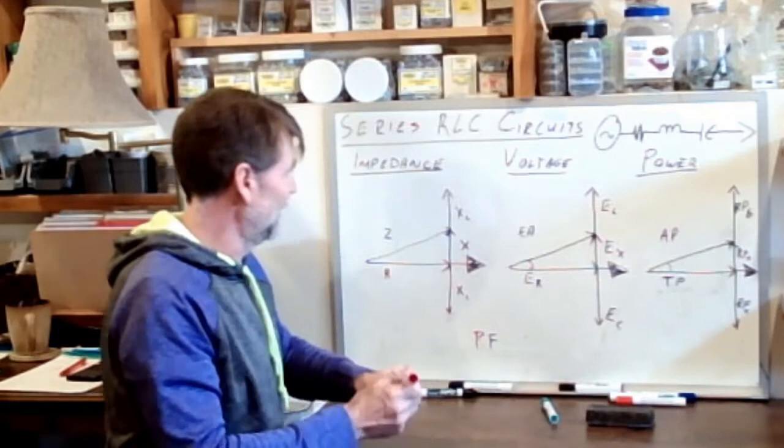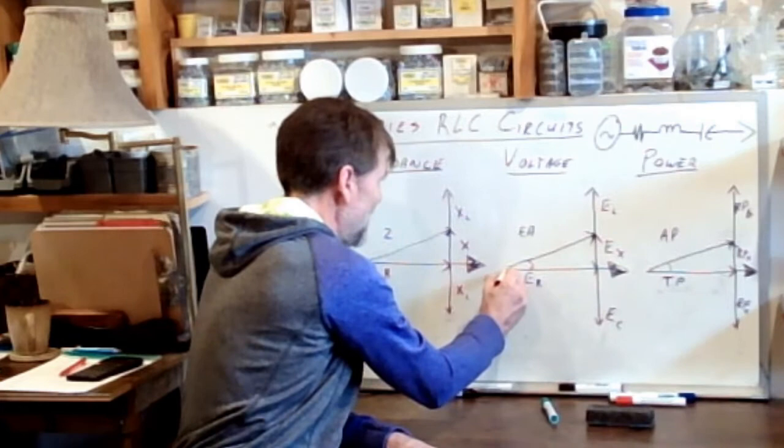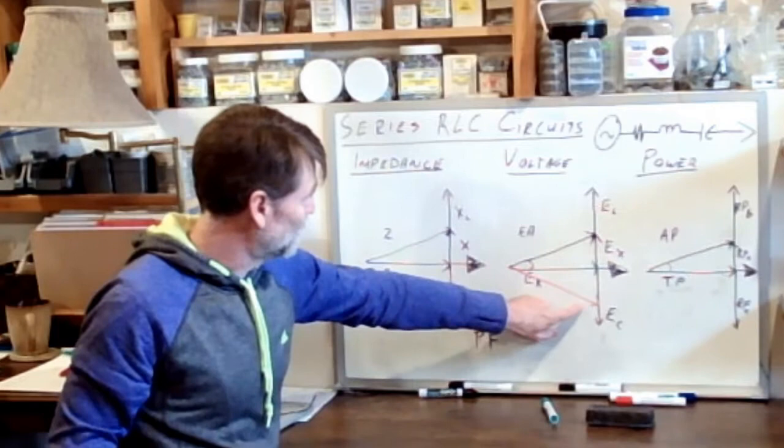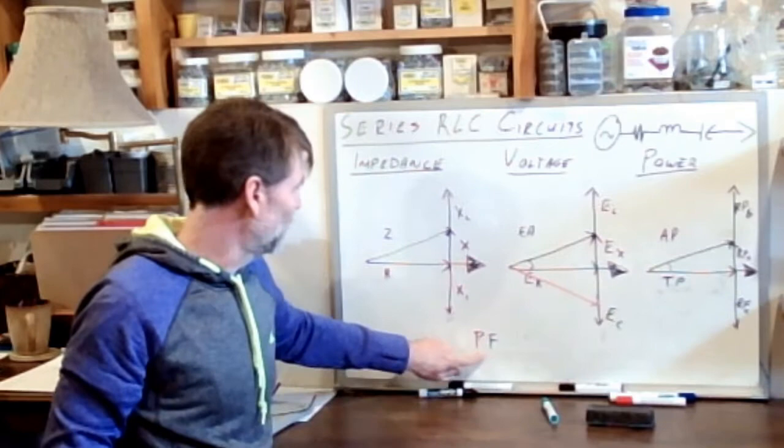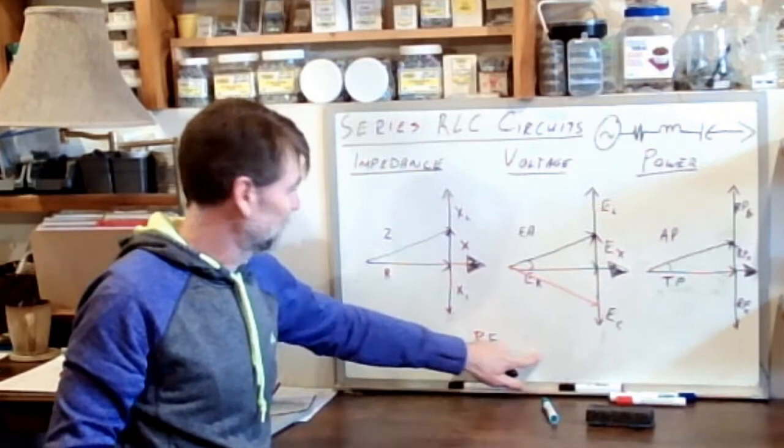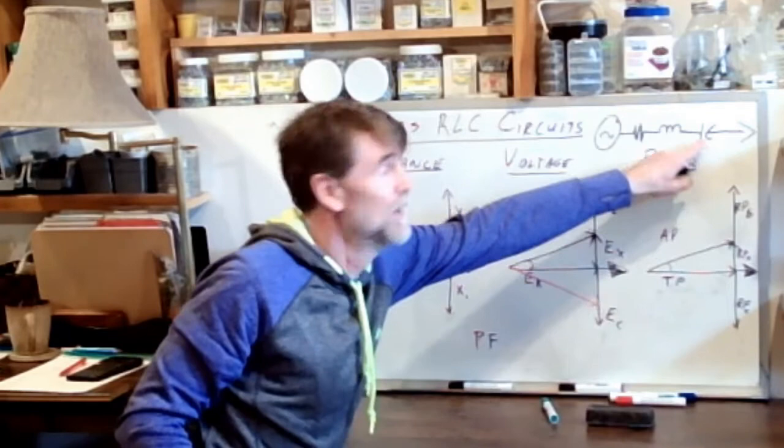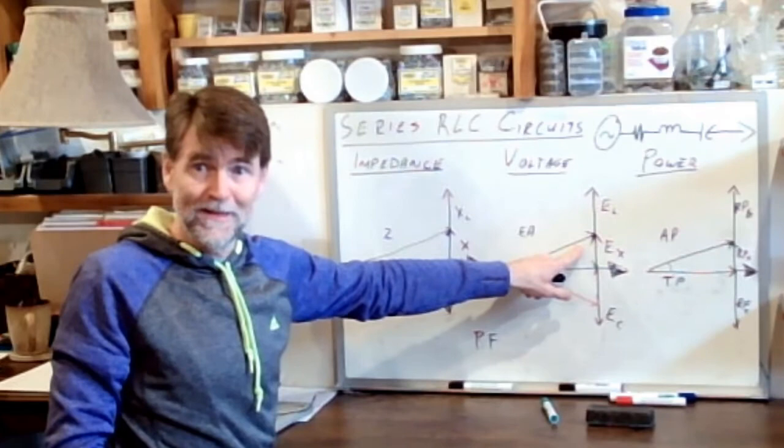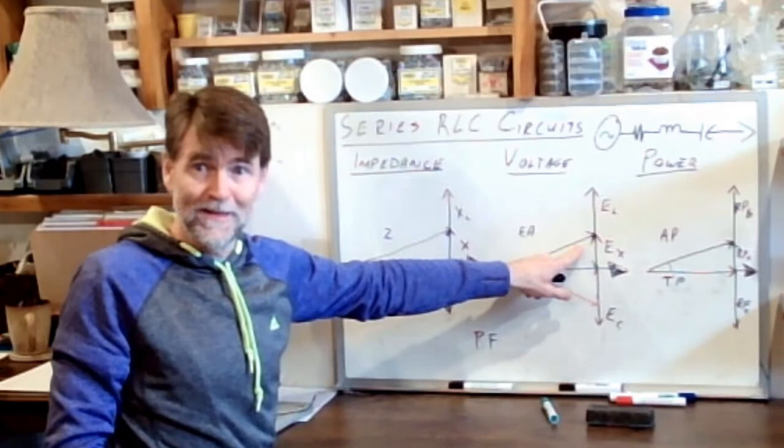It is quite possible that the calculations might determine that when we cancel out these two vectors, we end up with a vector that's down here. In which case, we would say that the current is leading the voltage, and we end up with a power factor, whatever the number happens to be, based on the angle. But the power factor is going to be a leading power factor, which is to say the circuit is more capacitive than it is inductive. Or a lagging power factor, as the example was initially, means that we have a larger inductor than we do capacitor, and we say that we have a more inductive circuit. So what's left after we cancel the two out? That's where we have it.